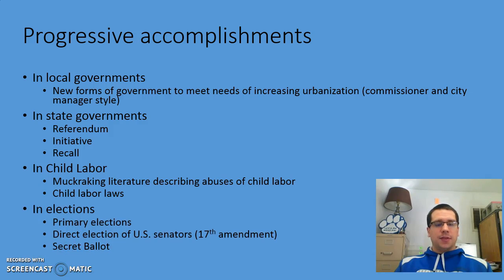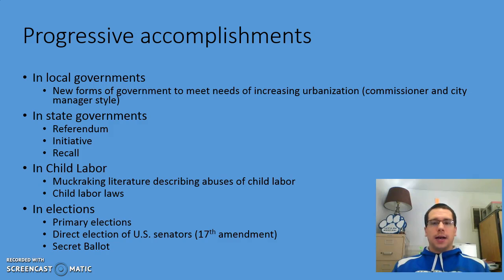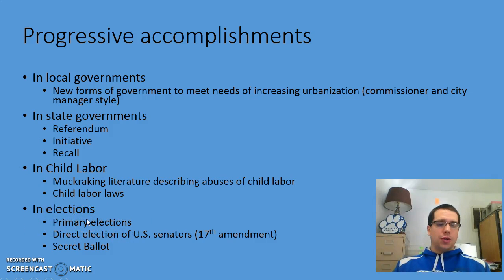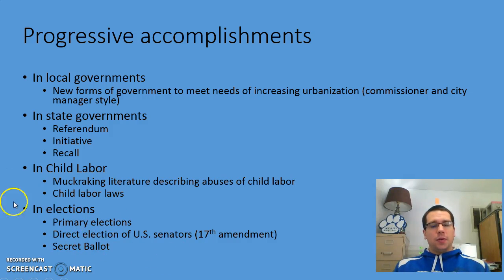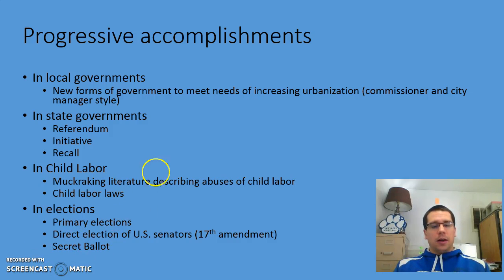Muckraking forced the passage of child labor laws. Because politics was dirty at this time, people pushed for cleaner elections — starting with primary elections so voters could choose their own candidates, the direct election of US senators, and the secret ballot so voters weren't publicly pressured. The only place without a secret ballot today is Iowa, as seen with the caucuses.